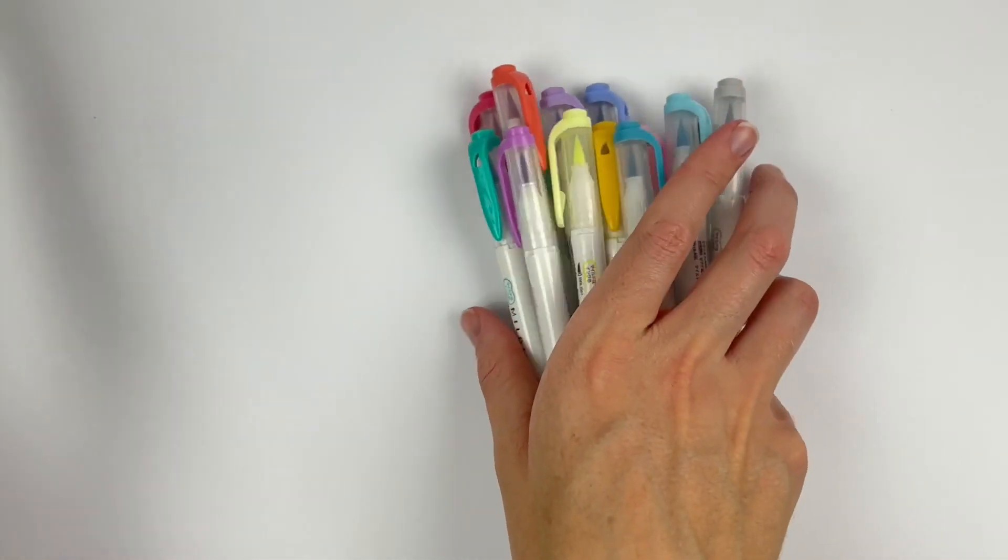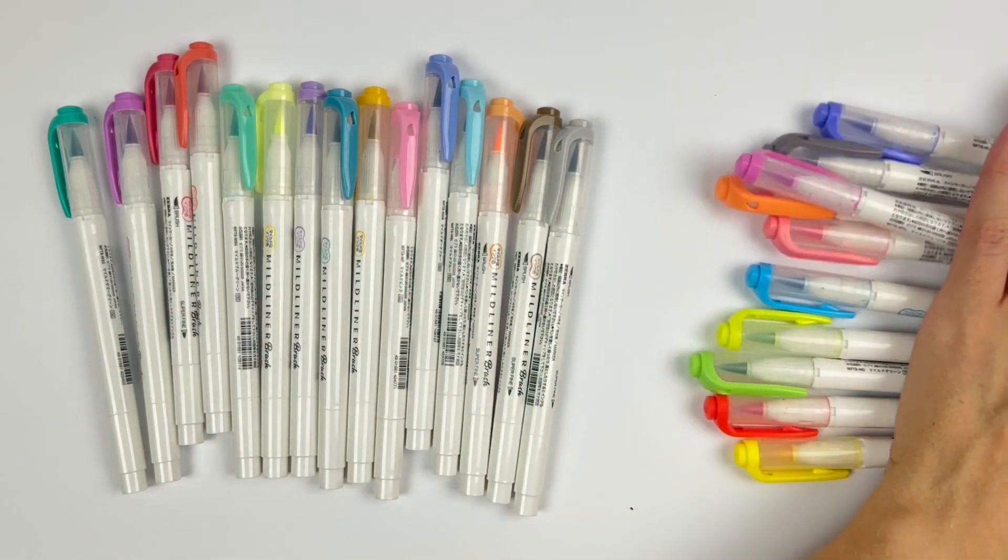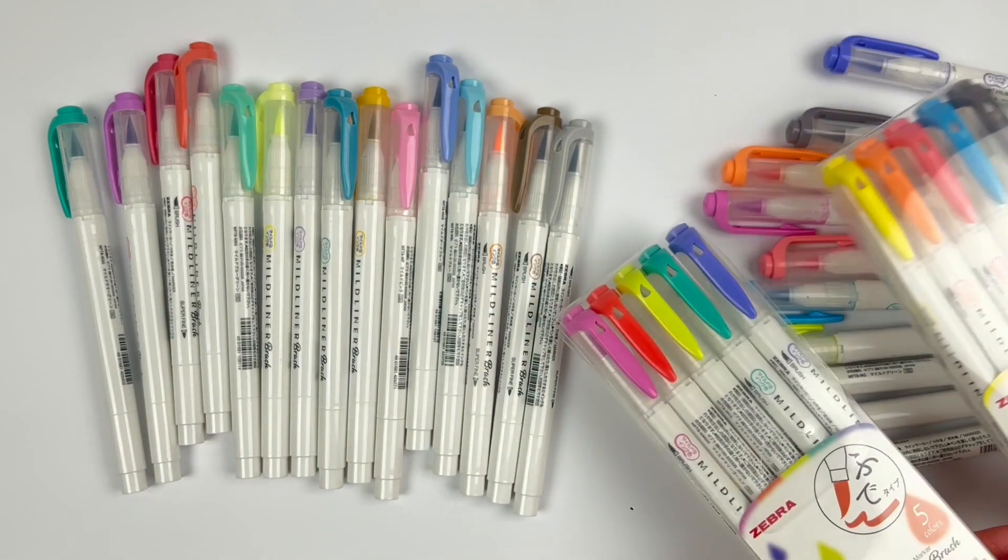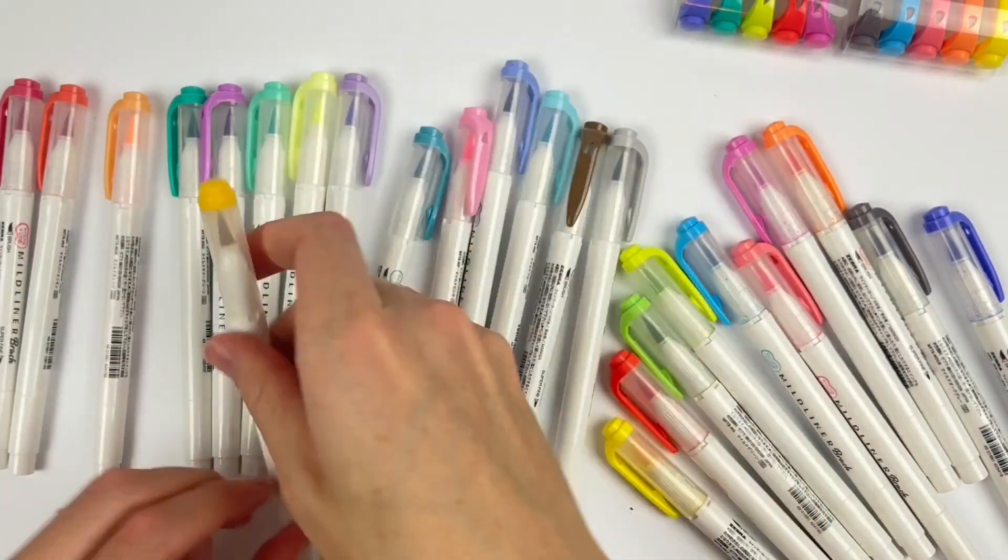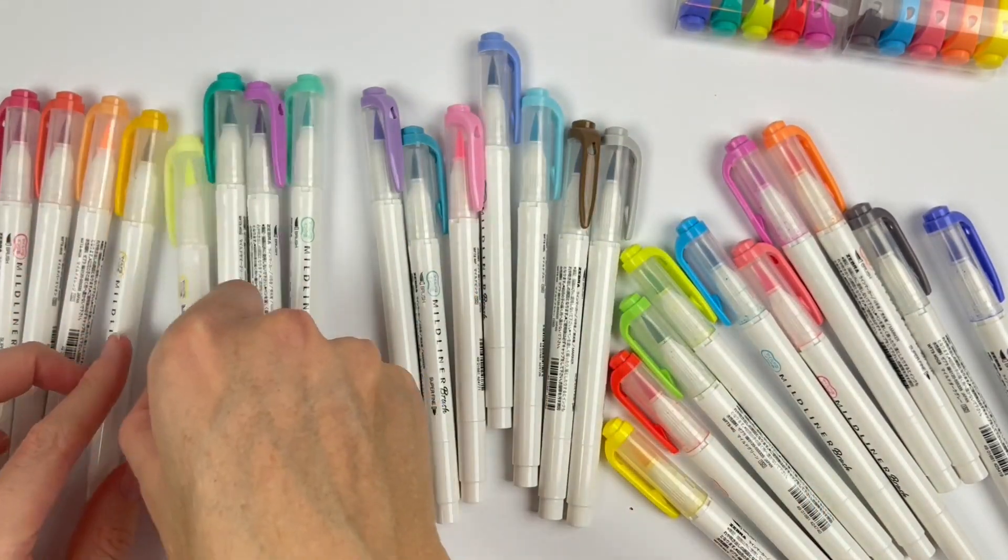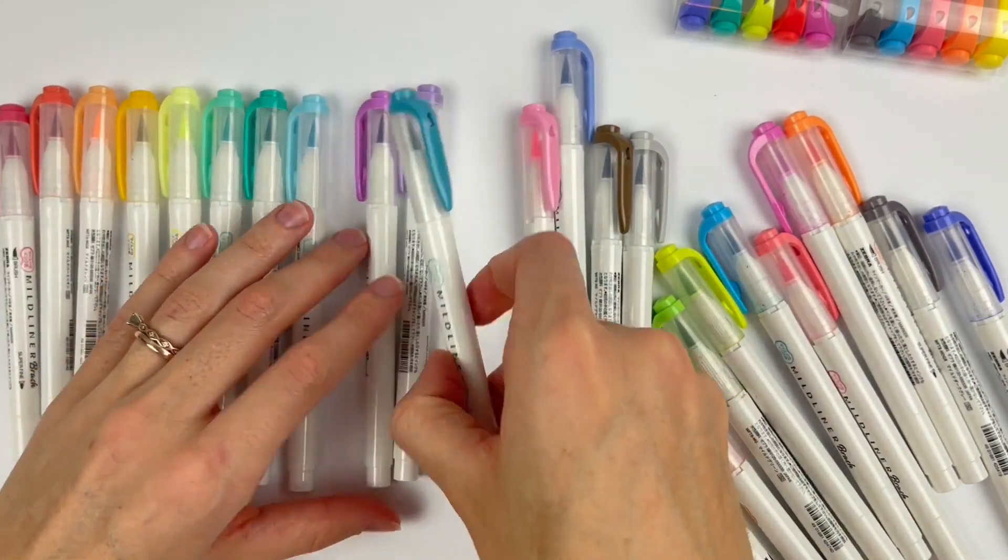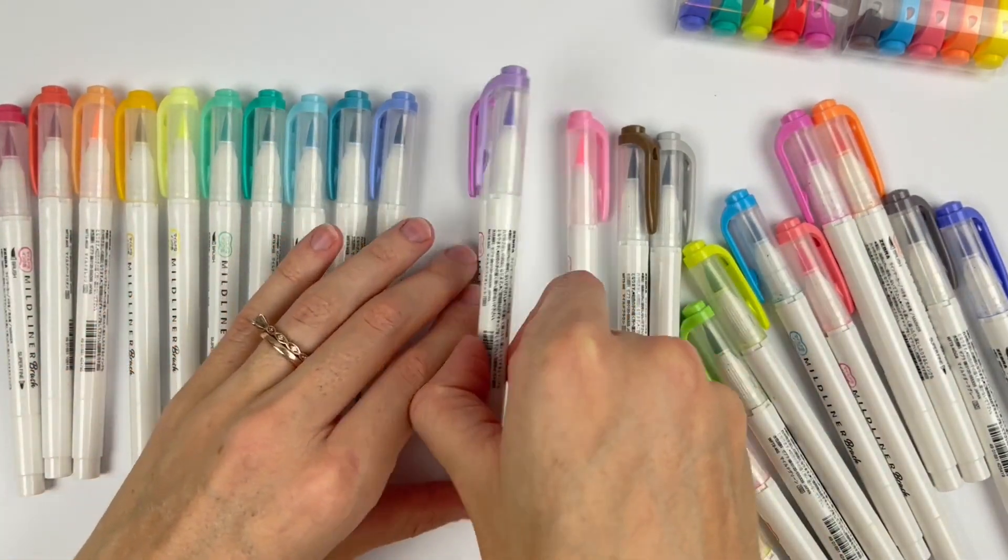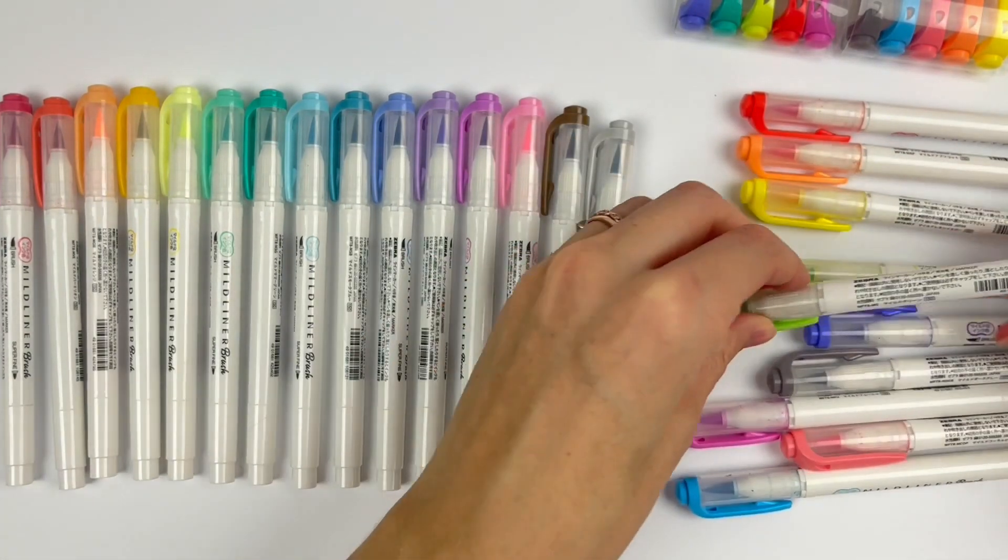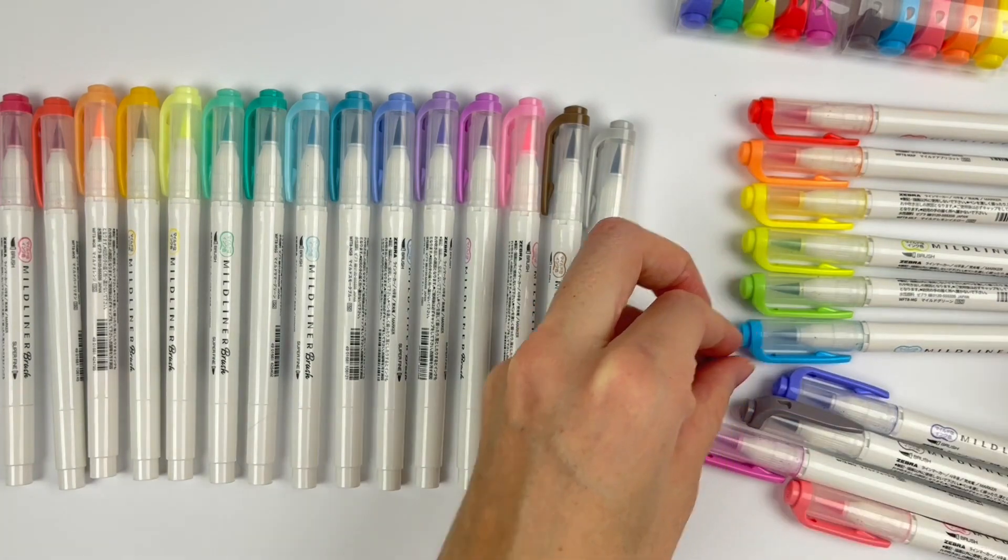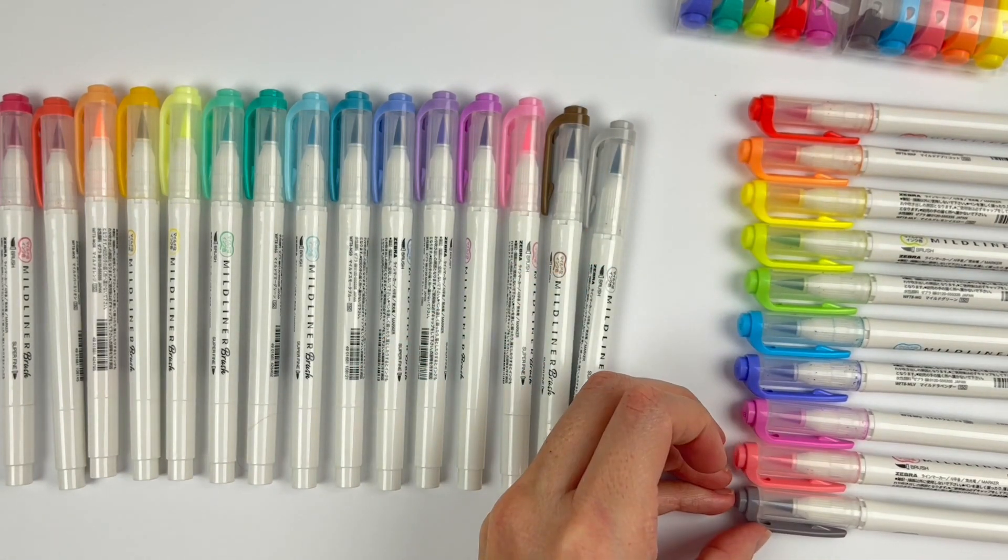Now we have the Zebra Mildliner Brush Pens. These are up there in my favorites, a close second to Karen markers. I have all the colors, and I've made my own color palette just like I did with the Karen markers. I have a few extras since I recently had to replace some of the colors that I use constantly. The colors are more mild, hence the name Mildliner. They are also a little more transparent, like highlighters.